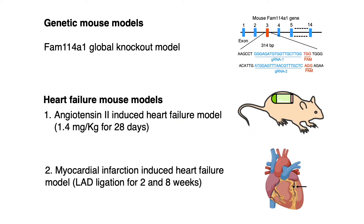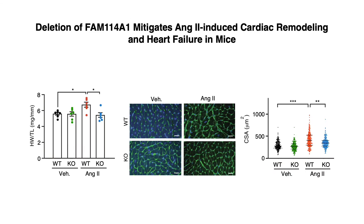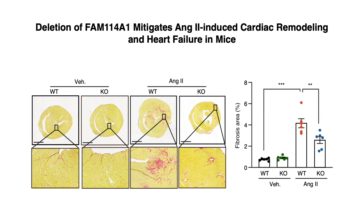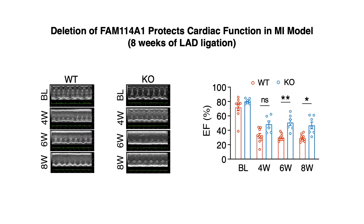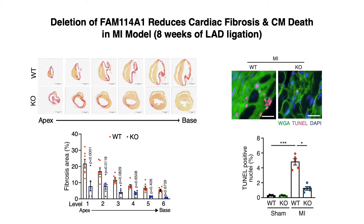To exploit the function of FAN141, we used the global FAN141 knockout mouse model and angiotensin II and MI heart failure models. In the angiotensin II model, we found that depletion of FAN141 reduced cardiomyocyte hypertrophy and fibrosis, accompanied by improved cardiac function and reduced hypertension. In the MI model, eight weeks post coronary artery ligation, we also observed improved cardiac function in knockout mice compared to wild-type mice, together with reduced cardiac fibrosis and cardiomyocyte cell death.